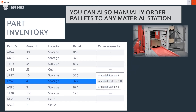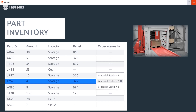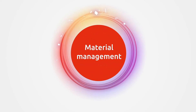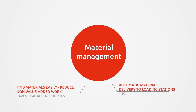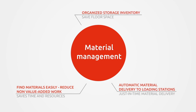You can also manually order any pallet at any time to the material station. Fastums material management system keeps production running smoothly, reduces labor cost, and puts you in control.